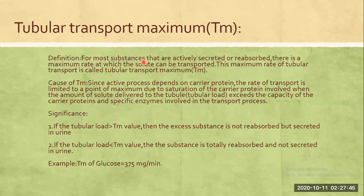For most substances that are actively secreted or reabsorbed, there is a maximum rate at which the solute can be transported. This maximum rate of tubular transport is called tubular transport maximum. Since the active process depends on carrier proteins, the rate of transport is limited due to saturation of carrier proteins when the tubular load exceeds the capacity of the carrier proteins and specific enzymes involved.